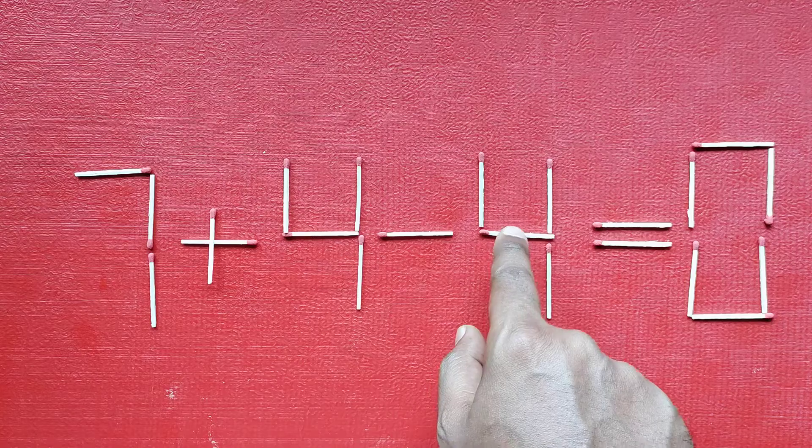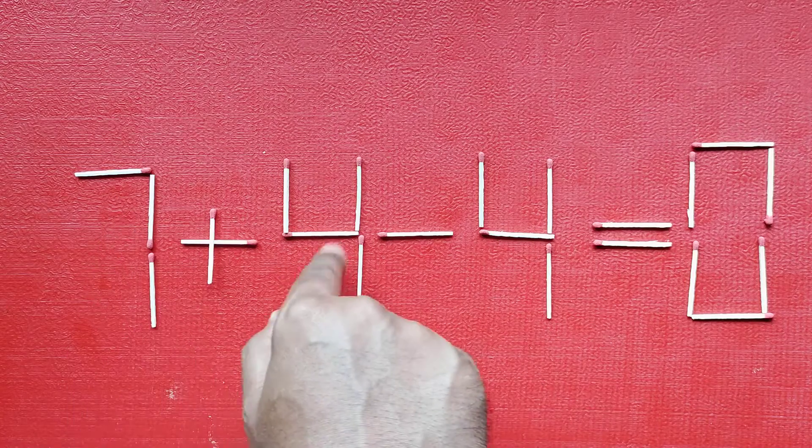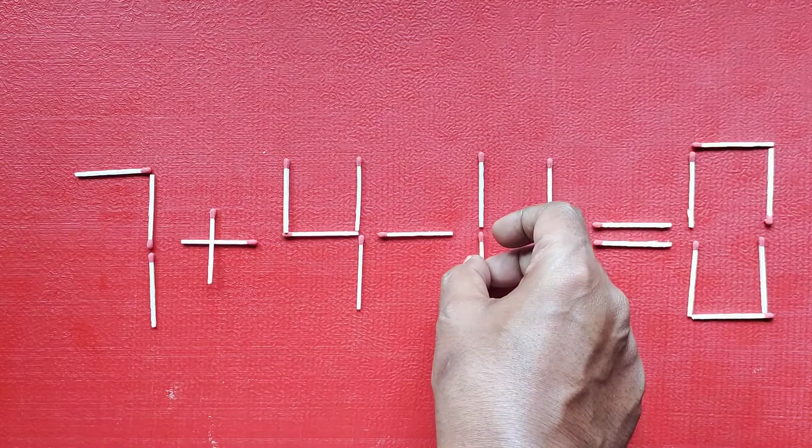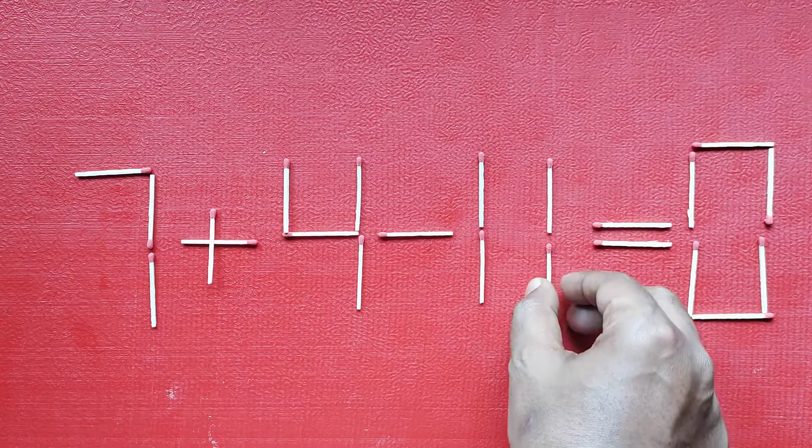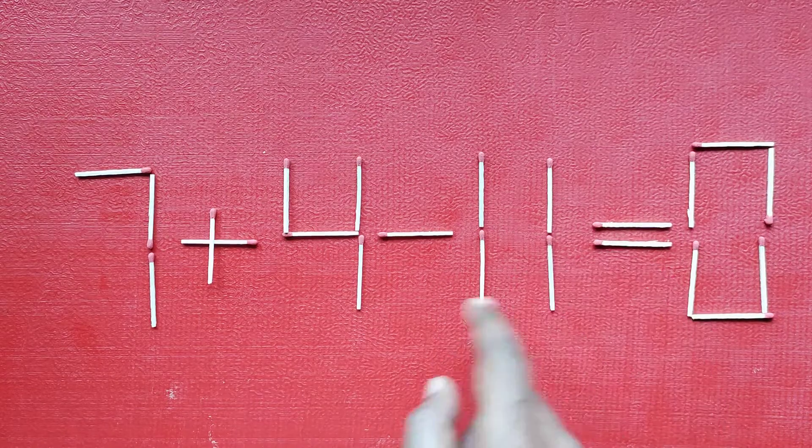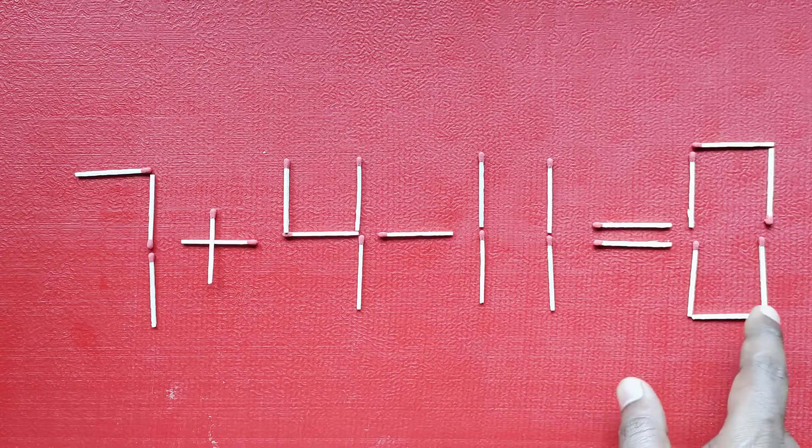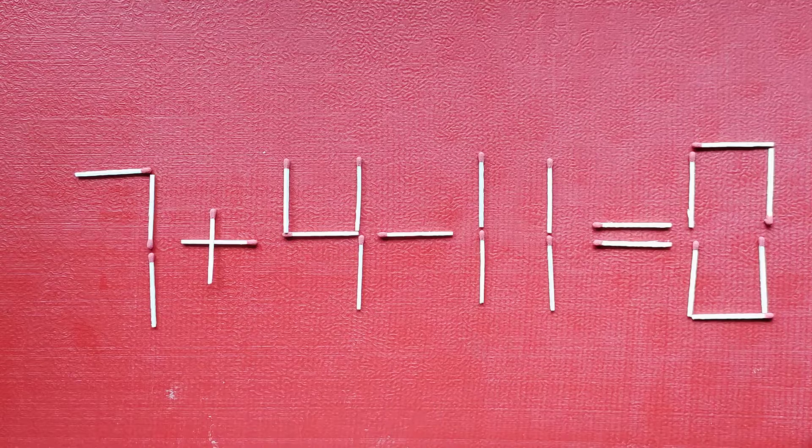So instead of this, I think we should make this as 11. So this is 7. 7 plus 4 is 11. Now if I move this matchstick and place it here, so now we have this as 11. So we have 7 plus 4 is 11, and 11 minus 11 is 0. That's the solved equation.